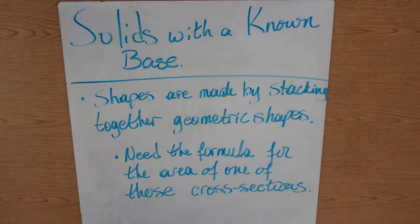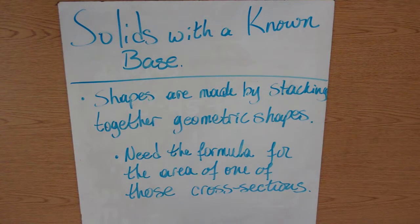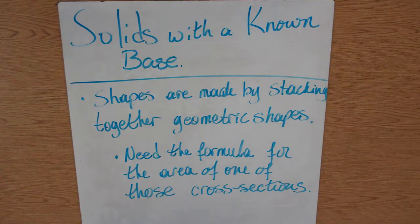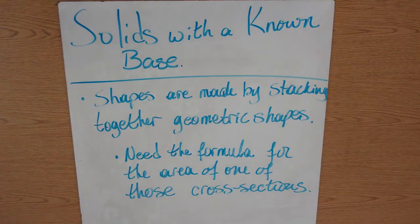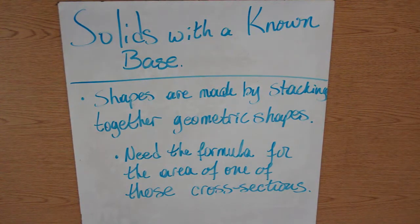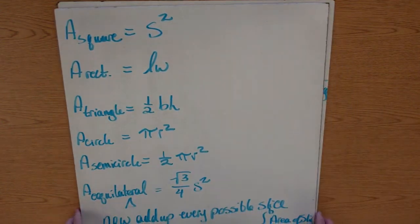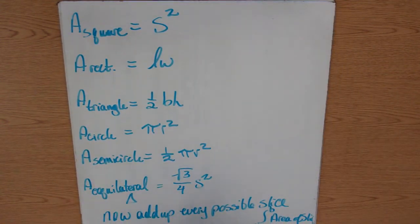Previously to this video, all of our cross sections have been circles, so we've been using area equals pi r squared. But what happens if our cross section does not form a circle? Well, then we're going to have to use the area formula for whatever shape our cross sections make.